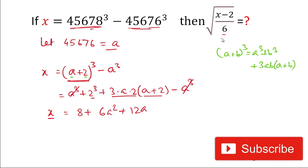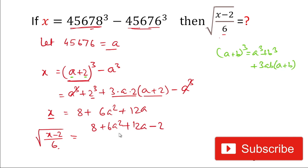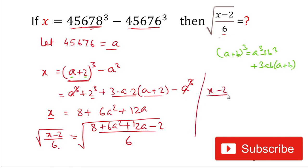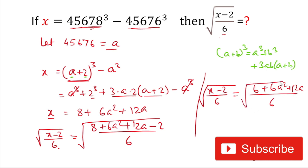We need to find (x minus 2) divided by 6. So we subtract 2 and divide by 6: that gives us the square root of (8 plus 6a squared plus 12a minus 2) divided by 6, which simplifies to the square root of (6 plus 6a squared plus 12a) divided by 6.